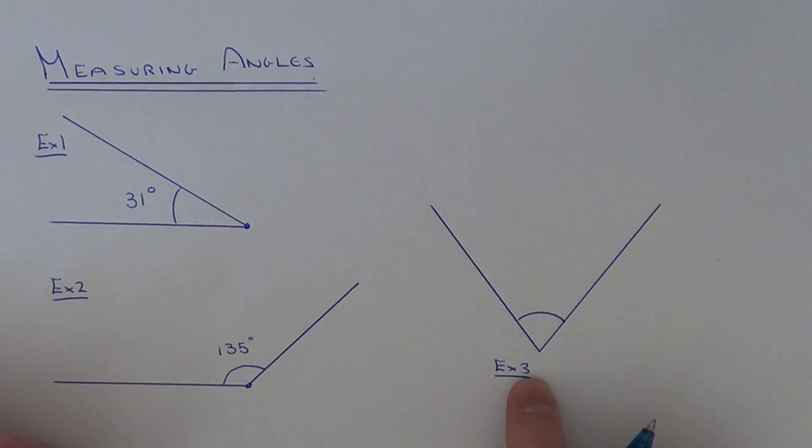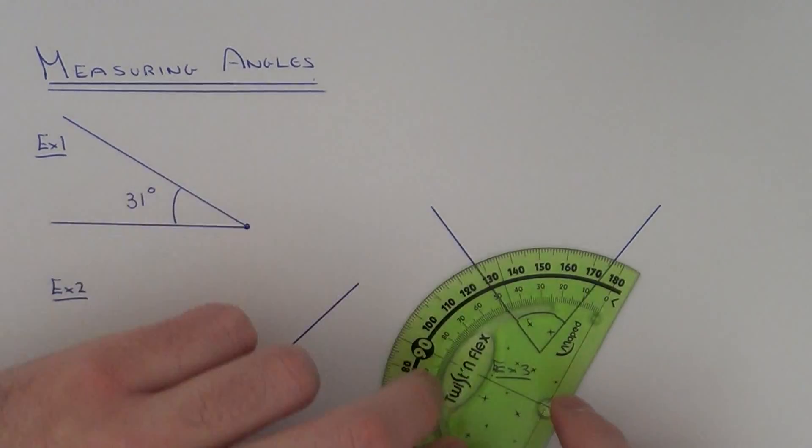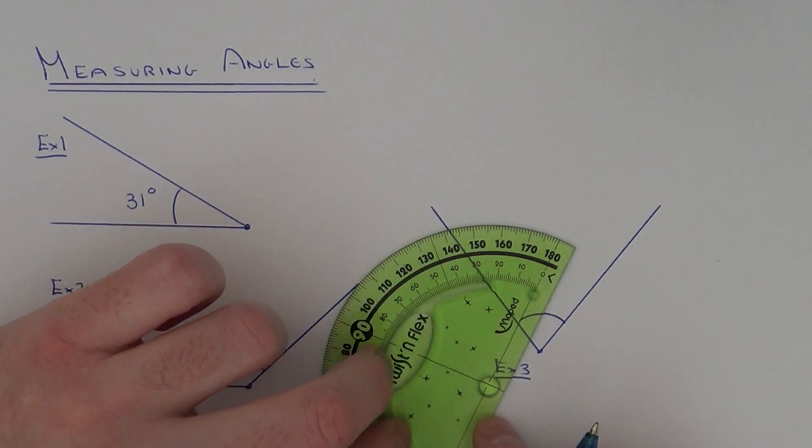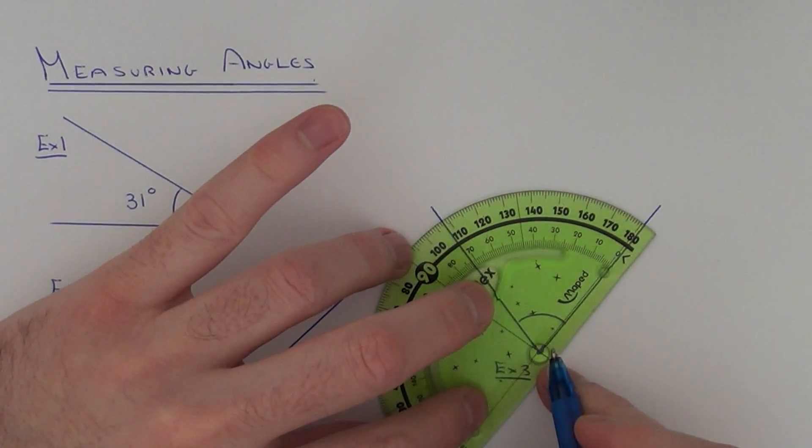So in example three, we've got the angle but it's been turned around a little, so you might want to turn your page around or you can just put it straight on in that position if you're happy with that. I think I'm just going to leave it in that position. Get your protractor, get the center of your protractor, put it onto the corner of the angle.